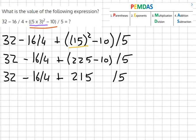And then it's simple division here. So 32 minus 16 over 4 which equals 4 plus 215 over 5 which equals 43.